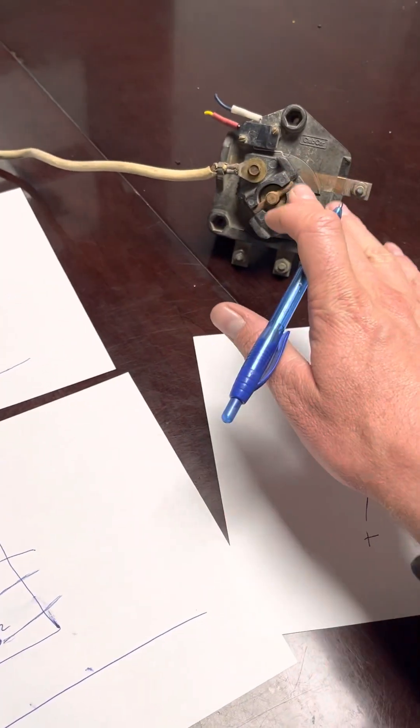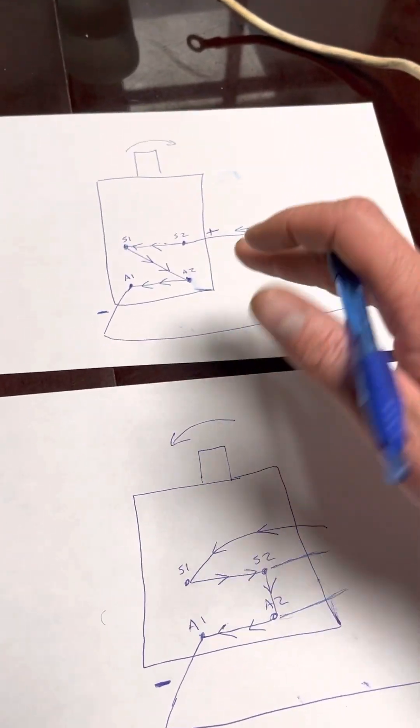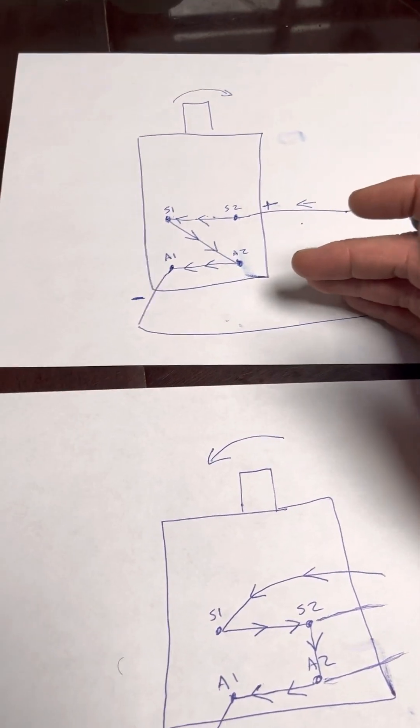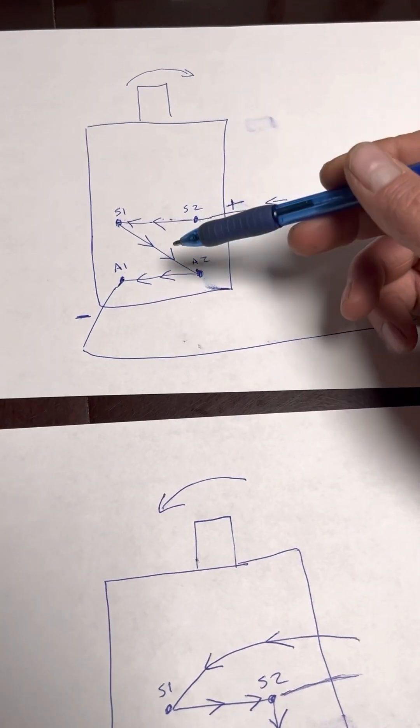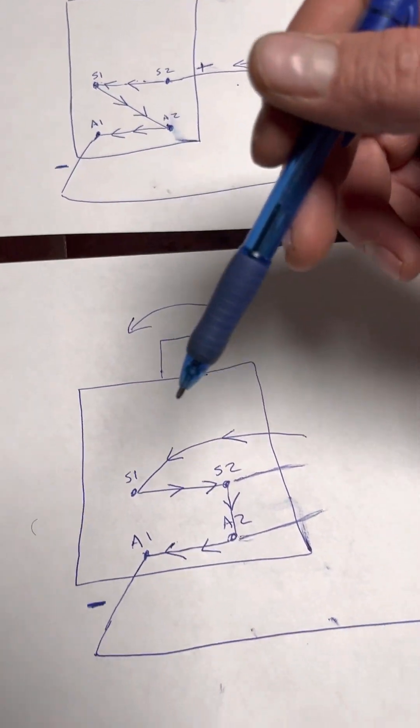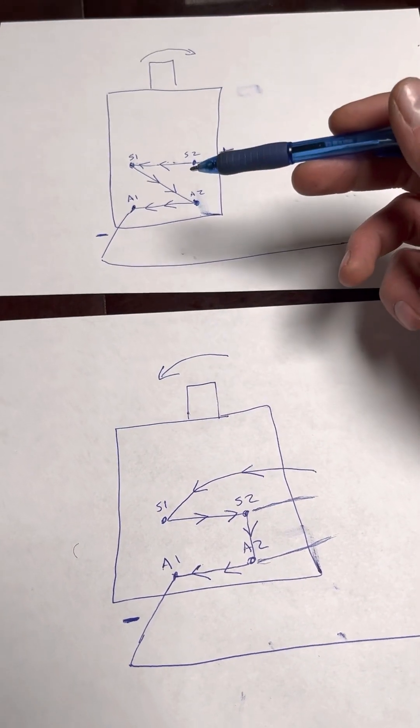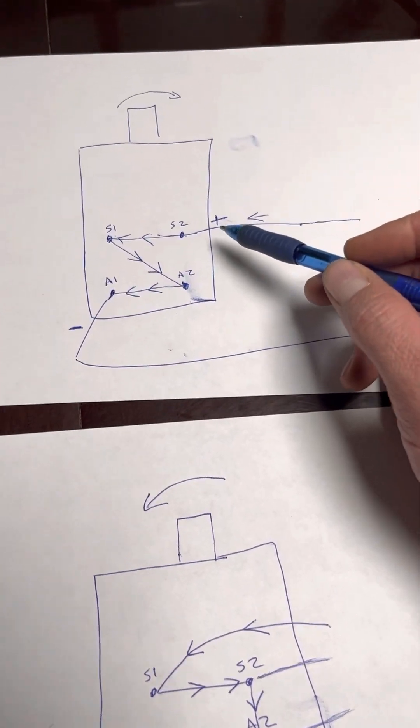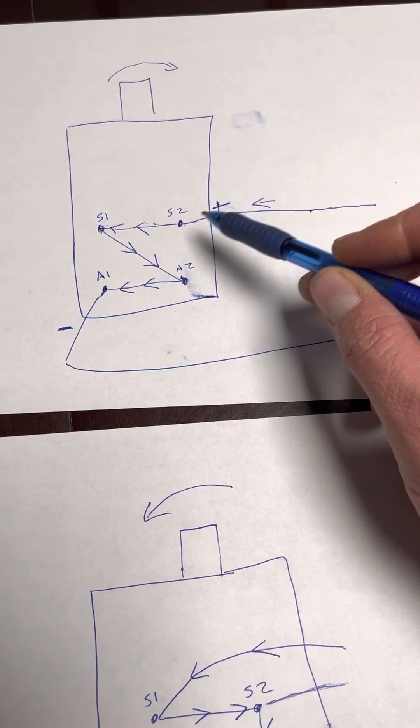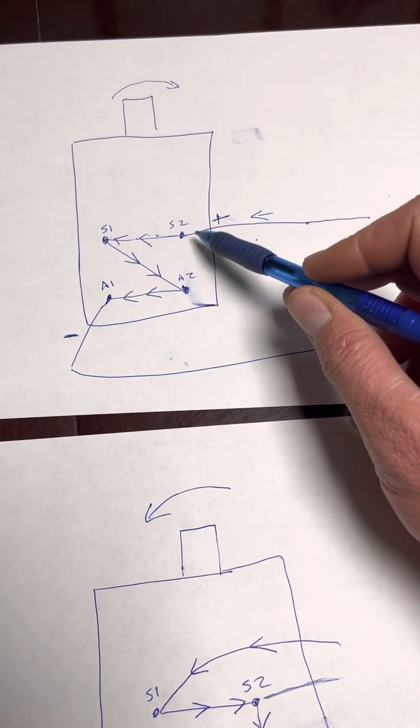And this would be a typical use case for a reverse switch on a series motor. So what changes the direction of the armature spinning on a series motor is not the switching of the polarity on the main posts, positive and negative.